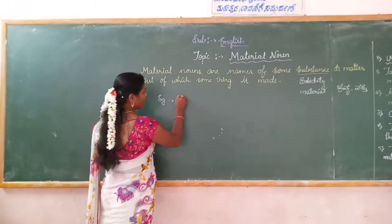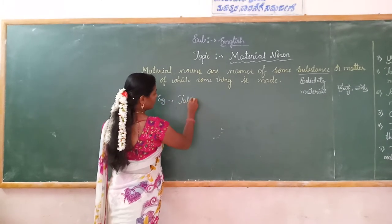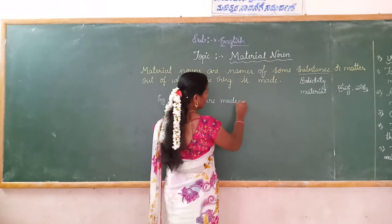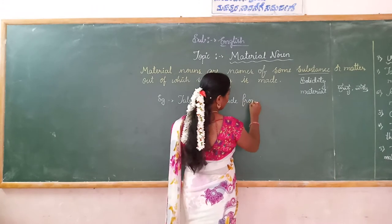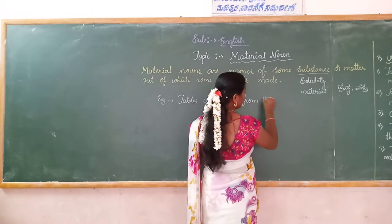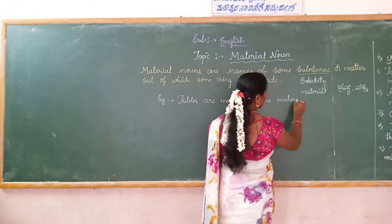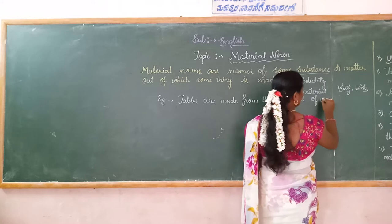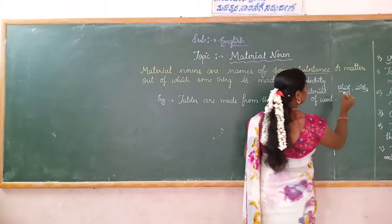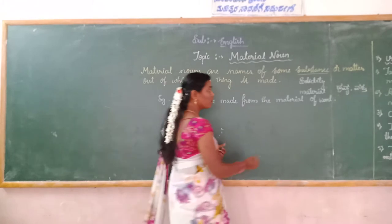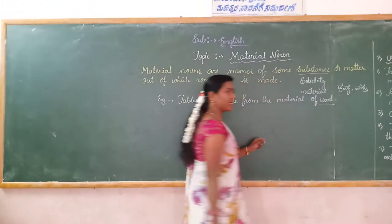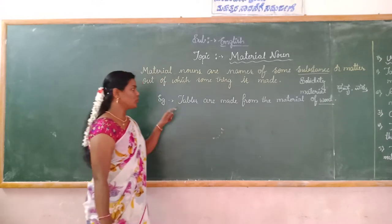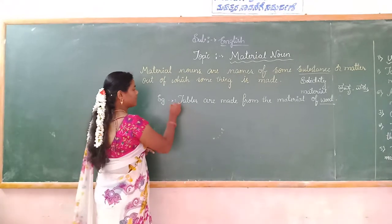Tables are made from the material of wood. In this sentence, which is the material noun? Wood. Wood is the material noun. Wood is the material used to make a table.